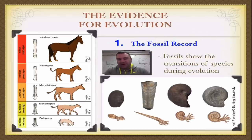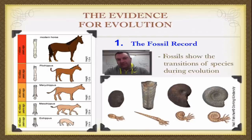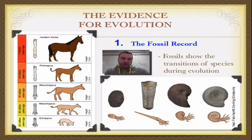I first want to start off with the fossil record. The fossil record is not complete because it's kind of hard for an organism to form a fossil, and then it's hard for us as human beings to find them. But there are a number of fossils out there that show what we would call a transitional species.